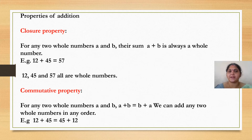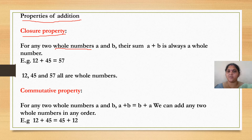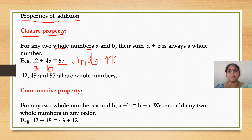We have seen how to add, subtract, and multiply on the number line. Now we will see the properties of addition. The first one is the closure property. For any 2 whole numbers A and B, their sum A plus B is always a whole number. For example, A is 12 and B is 45. When I add both numbers, I get 57. 57 is a whole number. So 12, 45, and 57 are all whole numbers — when you add two whole numbers, the answer is also a whole number.